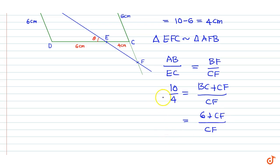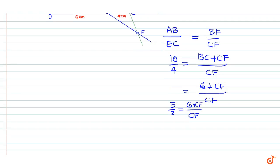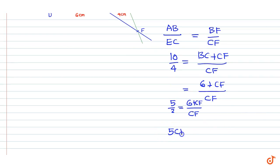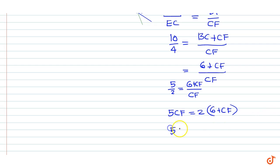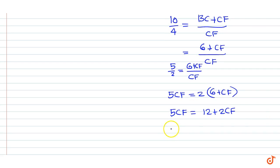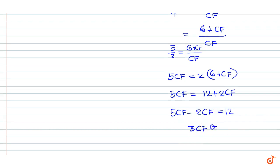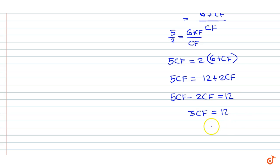So 10 by 4 equals 5 by 2, which equals 6 plus CF divided by CF. Cross-multiplying: 5 CF equals 2 into 6 plus CF, that is 5 CF equals 12 plus 2 CF, therefore 3 CF equals 12 centimeters, and CF is equal to 12 divided by 3, which is equal to 4 centimeters.